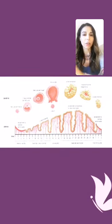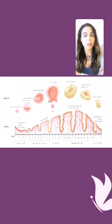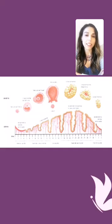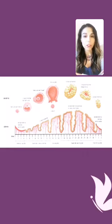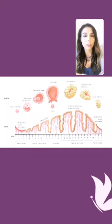Before we start, I'd like to show you an image that shows you the menstrual cycle. At the top, you can see what is happening in the ovaries — the ovarian cycle. And at the bottom, you can see what is happening in the uterus — the uterine cycle.